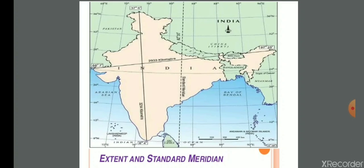Extent of India: the north-to-south length, from Kashmir to Kanyakumari, is 3,414 kilometers. The east-to-west distance is 2,933 kilometers.